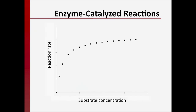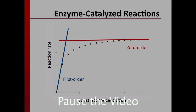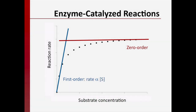For many enzyme-catalyzed reactions, if we were to measure the rate of reaction at various substrate concentrations, we would see that the rate of reaction appears to follow first-order kinetics at low substrate concentrations, and then transitions to behavior that resembles zero-order kinetics at high substrate concentrations. In a first-order reaction, the reaction rate is directly proportional to the concentration of the substrate. In a zero-order reaction, the reaction rate is constant and is unaffected by the substrate concentration. So for a given enzyme concentration, the addition of substrate above a certain value has no effect on the rate of the reaction.